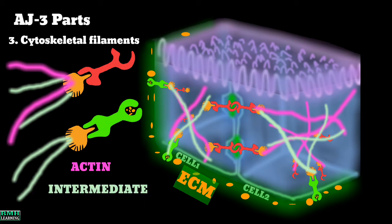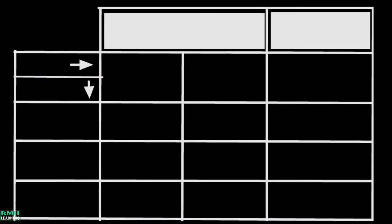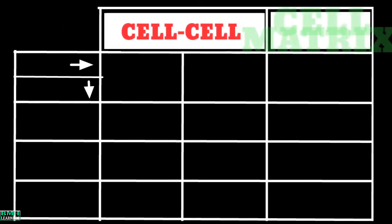Now let's talk about different types of anchoring junctions and proteins involved in their functioning. We have two types of anchoring junctions: one is cell-to-cell junction and the other one is cell-matrix junction.